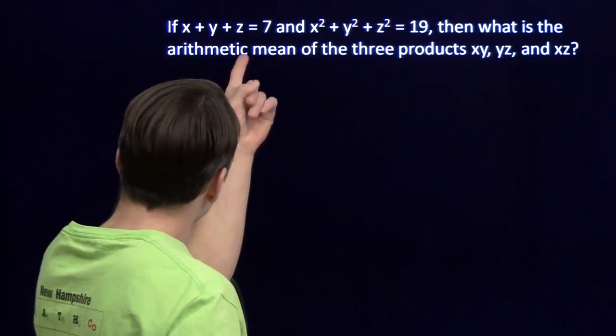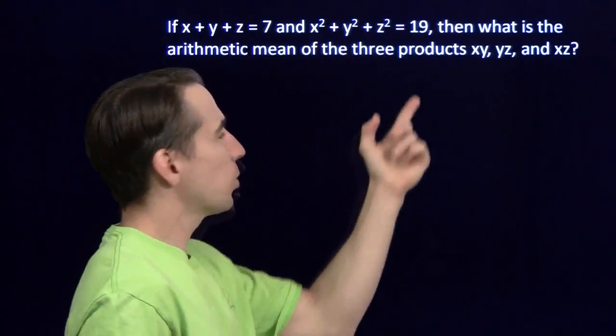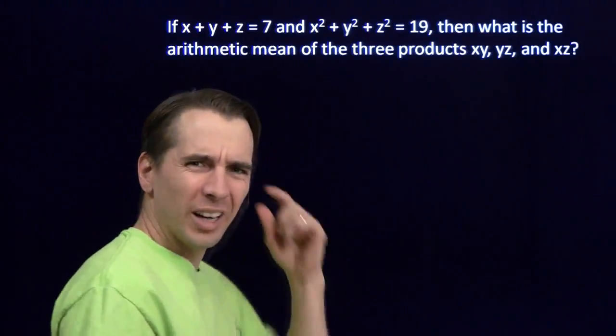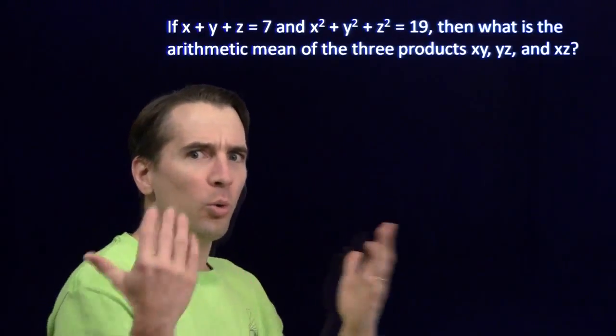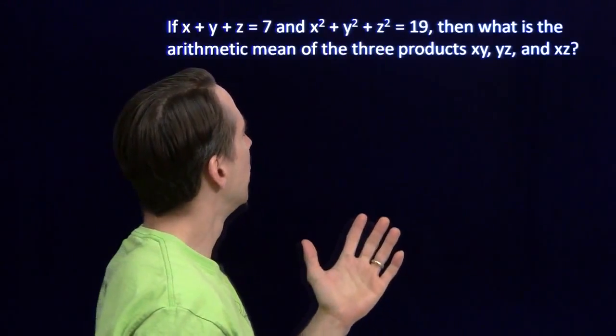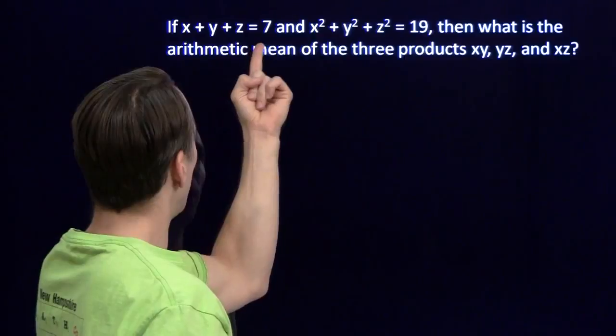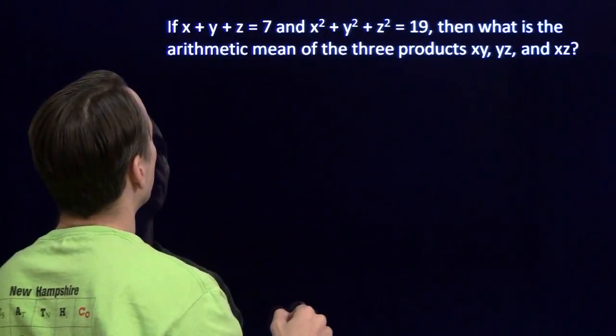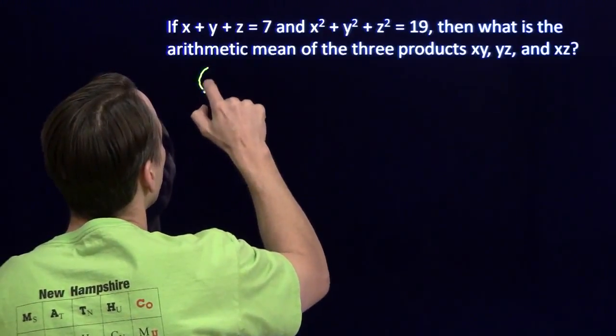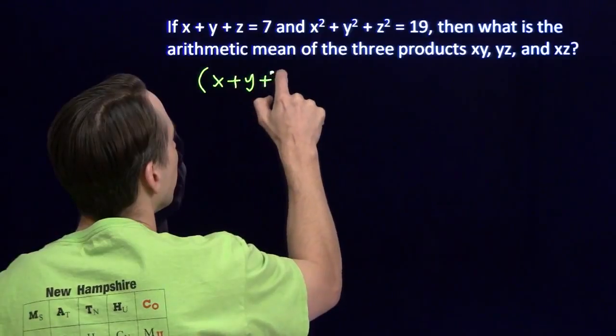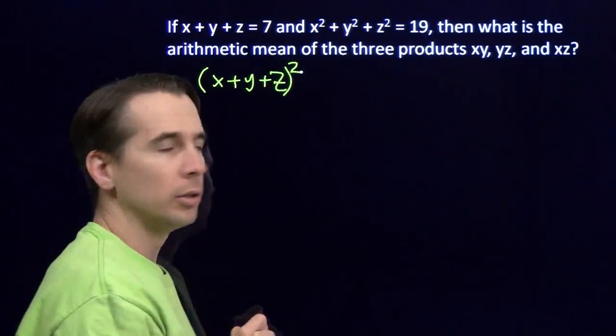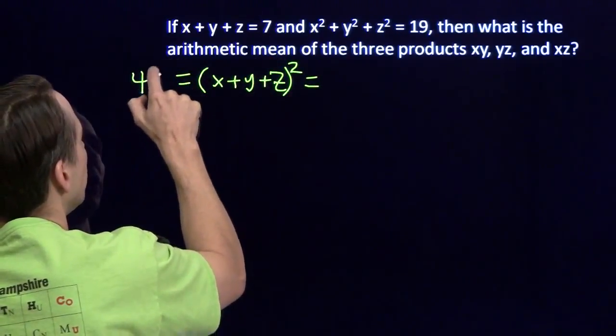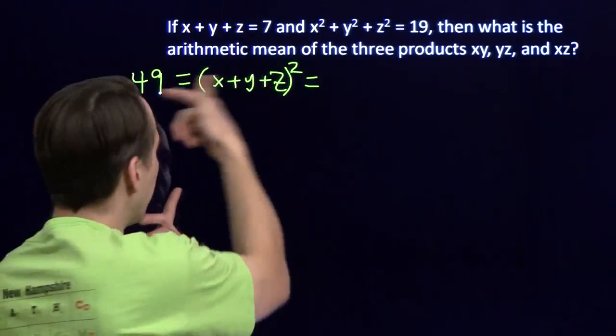We've got x plus y plus z is 7. Sum of the squares is 19. I could try to guess numbers that work for x, y, and z, but what we saw before, we don't always have to figure out what the variables are to solve the problem. Let's try that here. I've got x plus y plus z and the sum of the squares. And I can relate those by squaring this. If I start off with x plus y plus z squared, I know that that equals 49, because we're told that this sum is 7, so we square that sum, we get 49.